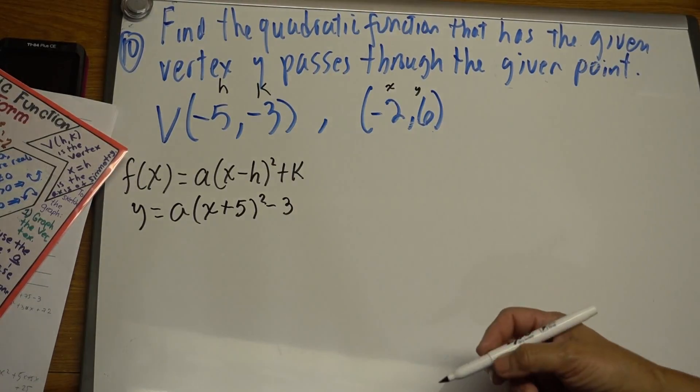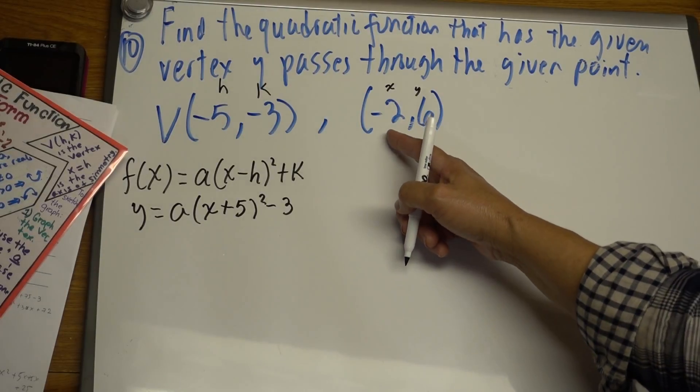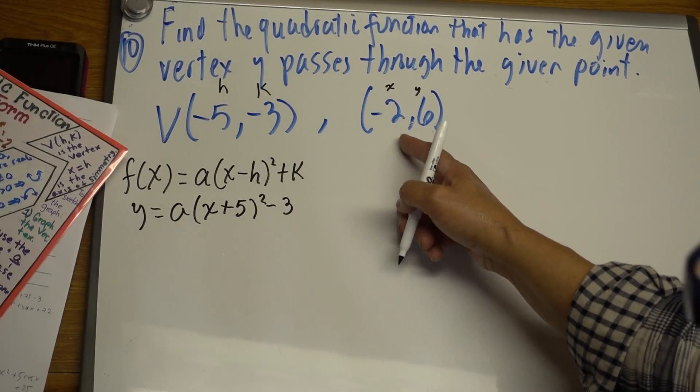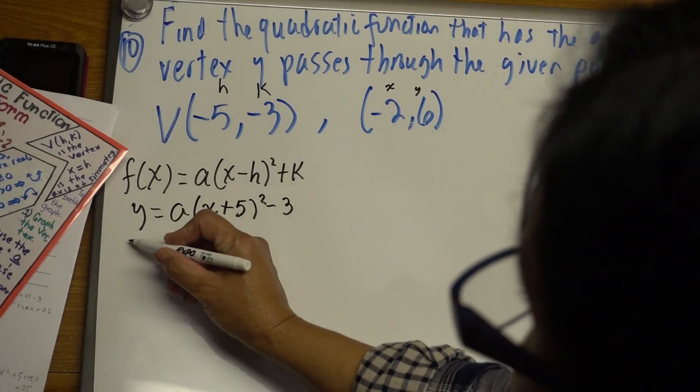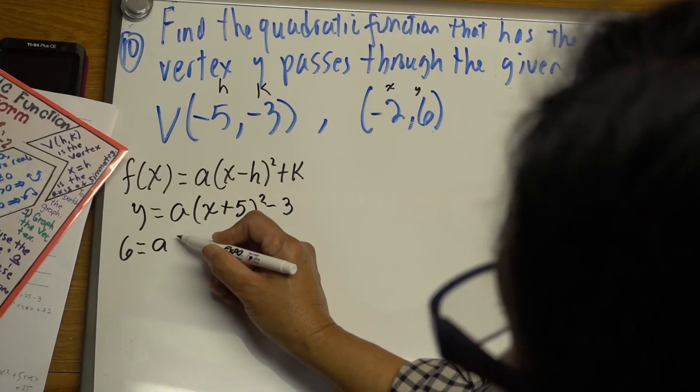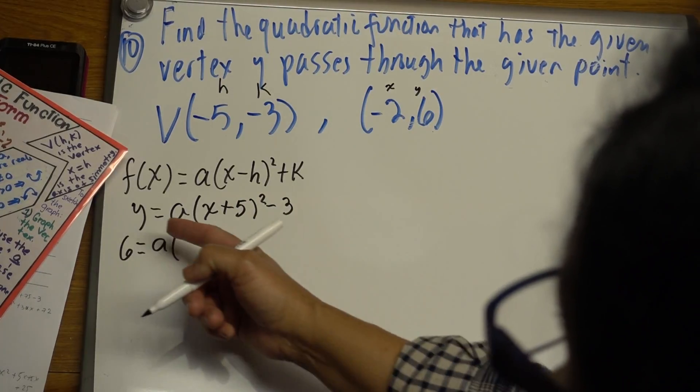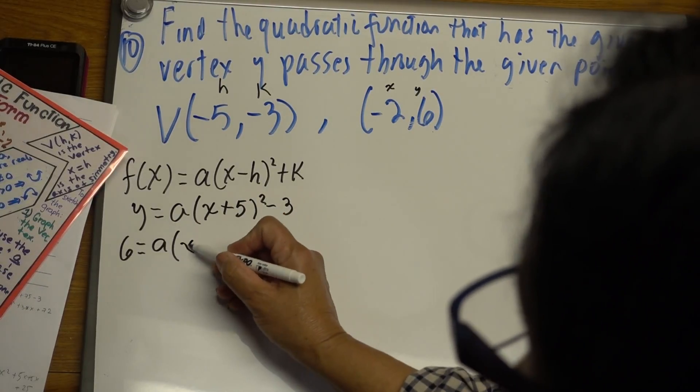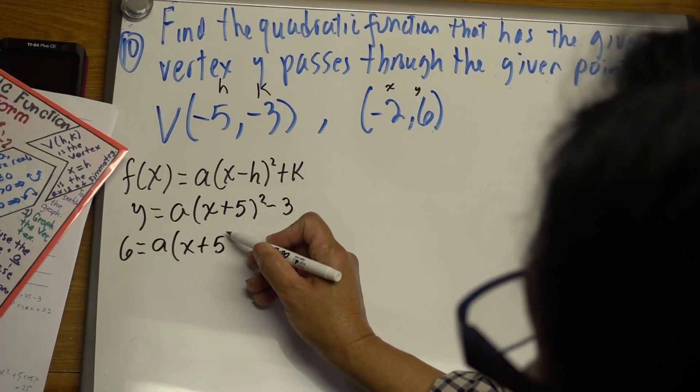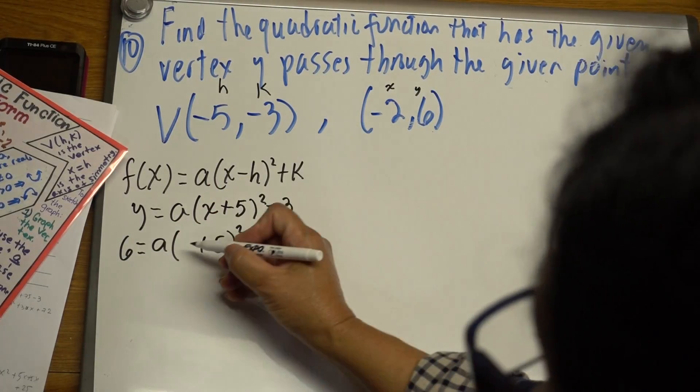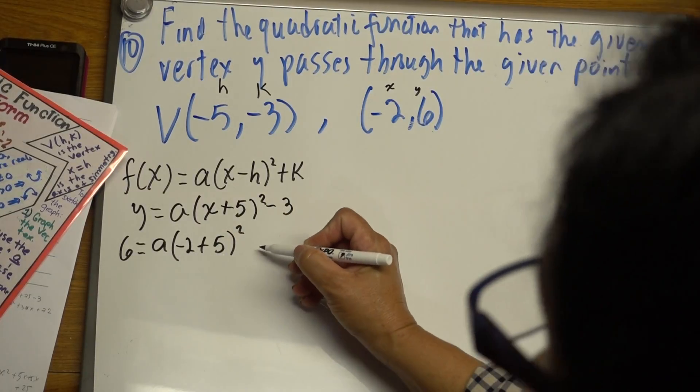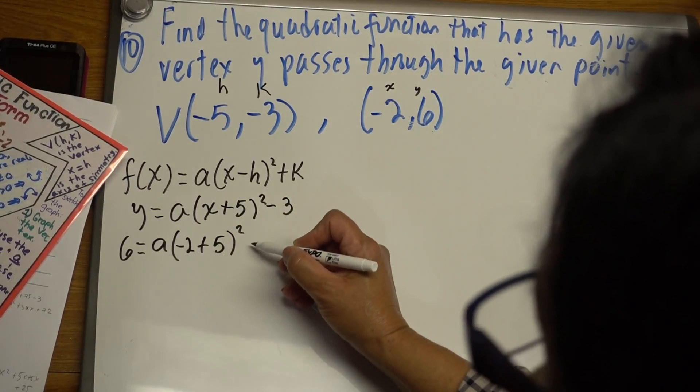The given point is (-2, 6). So these are the values we're going to insert in x and y. So we want 6 for y. 6 equals a that we're looking for. We're almost done, we just need a. X plus 5 squared. But remember, x now is -2 squared. Negative 2 plus 5 squared, minus 3.